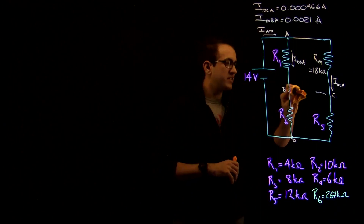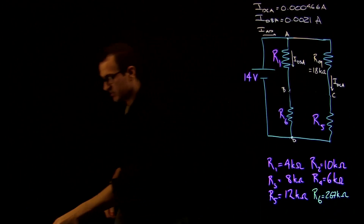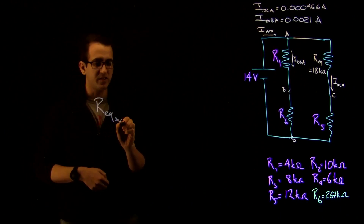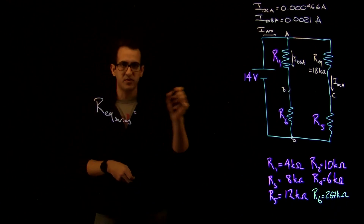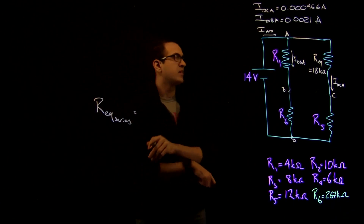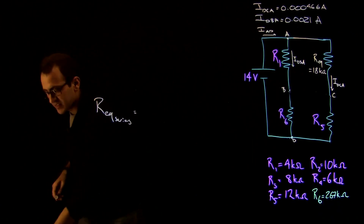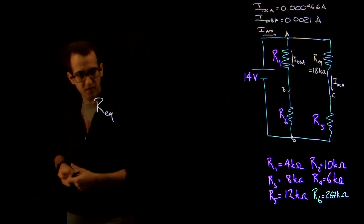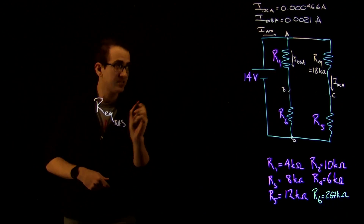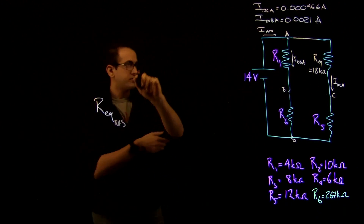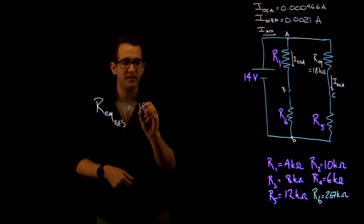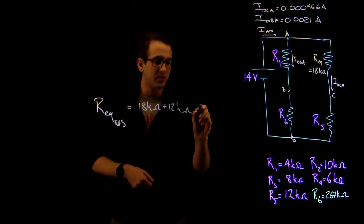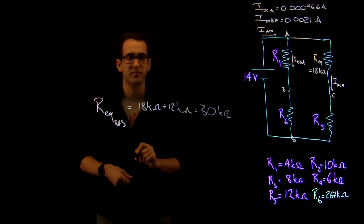We have these two parallel rungs. The first thing we remember is that for a series circuit, we add the resistances in the arithmetic sum. So the right-hand side — which I'll call Req RHS, right-hand side — is just going to be 18 kilohms plus 12 kilohms, which gives us 30 kilohms.